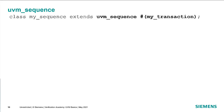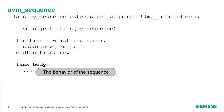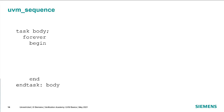As opposed to the sequencer, which is a component, the sequence is just data — a parameterized class parameterized by the transaction type. We declare our sequence extending from the UVM sequence base type, register it with the factory using the UVM object utils macro, and supply the standard object constructor with a name argument. The key part of a sequence is the body method — a task because it takes time — where we define the sequence's behavior, typically using a forever loop to continue generating transactions until we exit simulation.